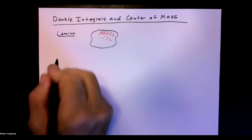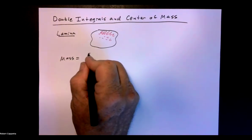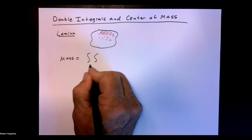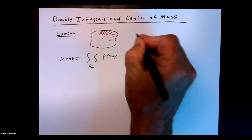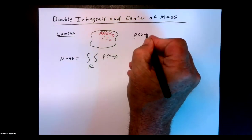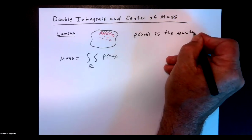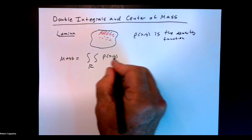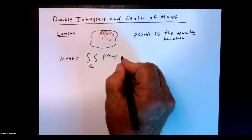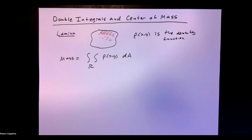The mass of the lamina is the double integral over the region R of the density function rho of x, y, dA — which is typically dy dx, unless we're working in polar coordinates or something like that. So that is our mass.